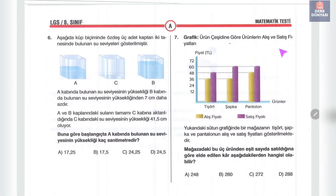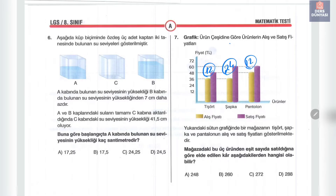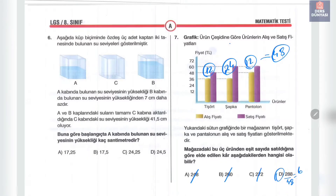Yedinci soruda sütun grafiğinde tişört, şapka ve pantolon alış-satış fiyatları veriliş. Karlar: tişört 48-36=12 TL, şapka 60-36=24 TL, pantolon 60-48=12 TL. Hepsinden birer tane satılsaydı toplam 48 TL kar. Eşit sayıda satıldığına göre kar 48'in katı olmalı. 288÷48=6, cevap 288 TL.